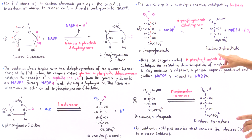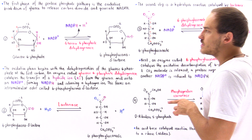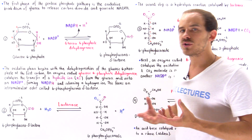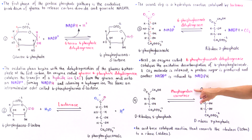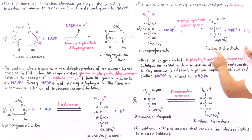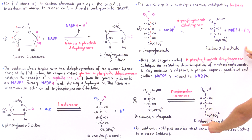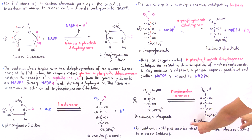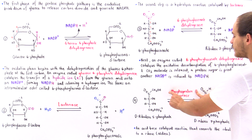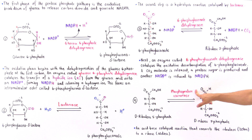Once we form the ribulose-5-phosphate, the final reaction is an isomerization reaction in which the enzyme phosphopentose isomerase transforms this ketose D-ribulose-5-phosphate into an aldose, the D-ribose-5-phosphate.